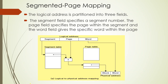The main idea is that the logical address is divided into three parts. The first part is the segment, the second part is the page, and the third part is the word. The segment field is the segment number. The page field is the page number — the page within the segment. The word field identifies the specific word within the page.